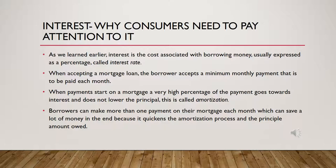Interest and why consumers need to pay attention to it. As we learned earlier, interest is the cost associated with borrowing money. It's usually expressed as a percentage, which is called the interest rate or mortgage rate. When accepting a mortgage loan, you accept usually a fixed interest rate and a payment amount that is to be paid each month. At the beginning, when you're paying off your mortgage, a very high percentage of the payment goes towards interest and doesn't lower the principal — this is called amortization. It's when you spread out what you pay for the home over a long period of time. Borrowers can make more than one payment on their mortgage each month, which can save a lot of money in the end because it quickens the amortization process and lowers the principal amount owed.